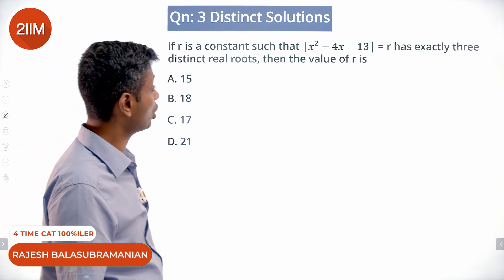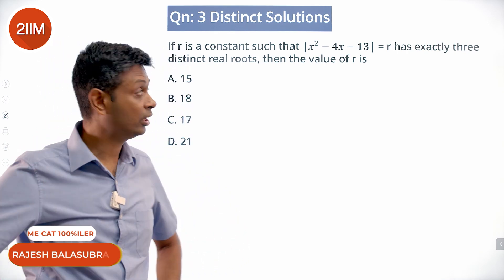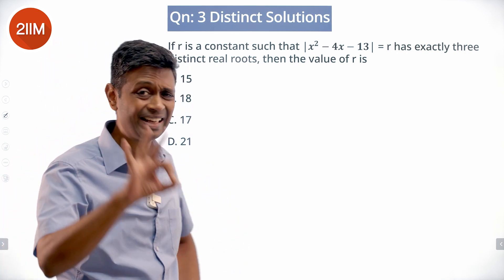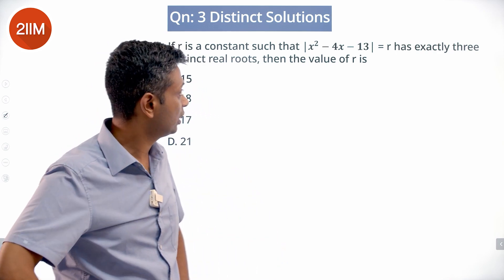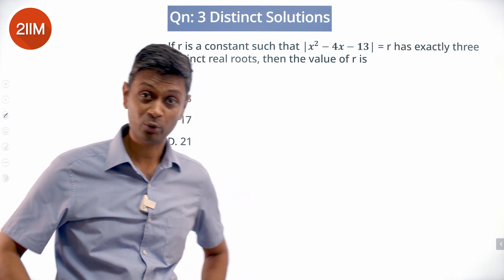If r is a constant such that |x² - 4x - 13| = r has exactly three distinct roots, find the value of r. I made a mess of this question so I am going to take revenge on this.